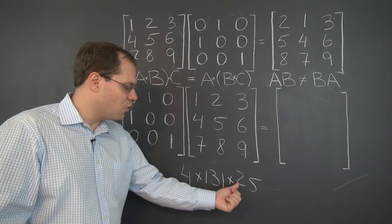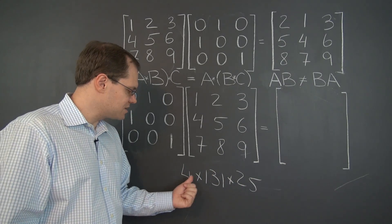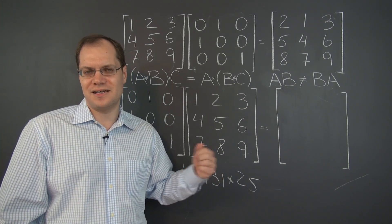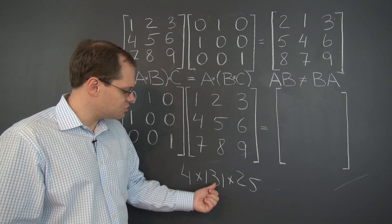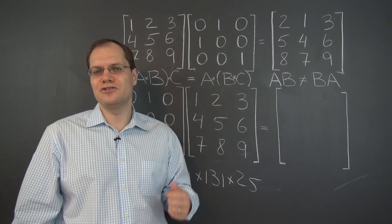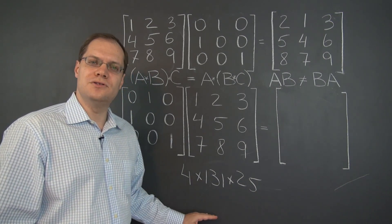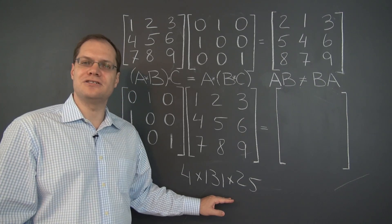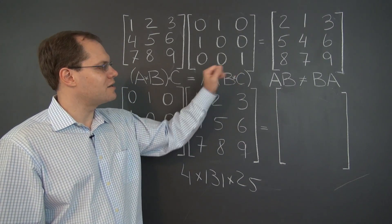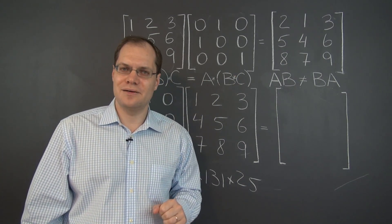Going back to this example, the smart order is to multiply 4 by 25 first, because that's 100, and then you get 131 times 100, which is 13,100. You were able to do this because multiplication is commutative. But the product of matrices is not commutative.